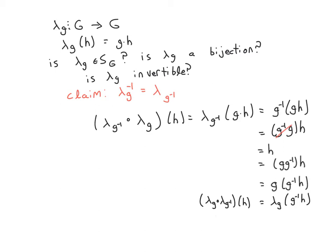So what do I see? I see for any H, these three things are equal. And therefore, lambda of G inverse composed with lambda of G is equal to the identity function is equal to lambda of G composed with lambda of G inverse. Which means lambda sub G inverse is the inverse of lambda sub G.